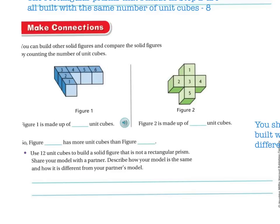Here's an example: figure one is made up of six unit cubes, and figure two is made up of five unit cubes. So figure one has more unit cubes than figure two, because figure one has six and figure two has five.